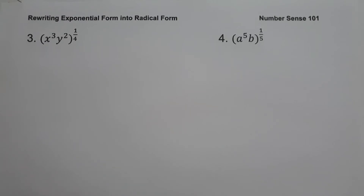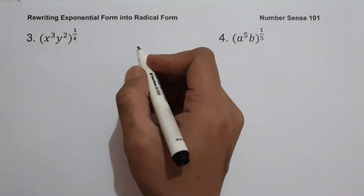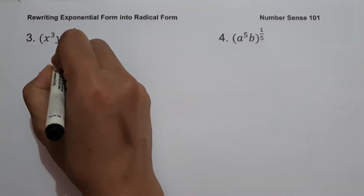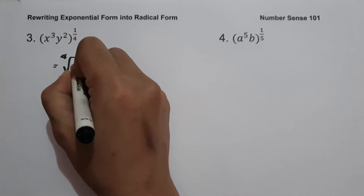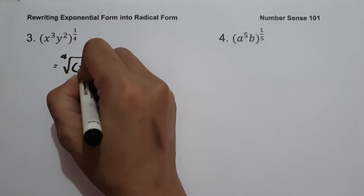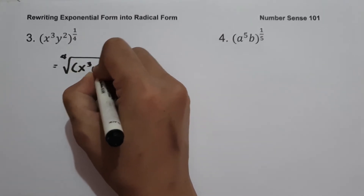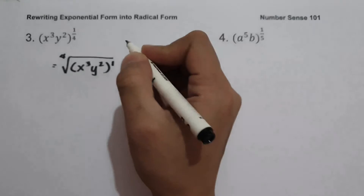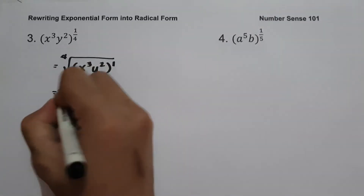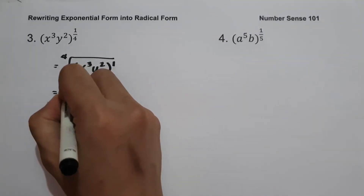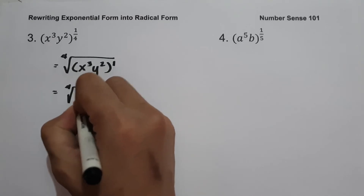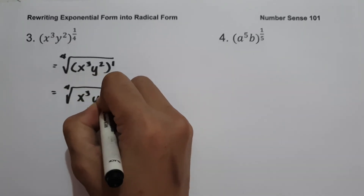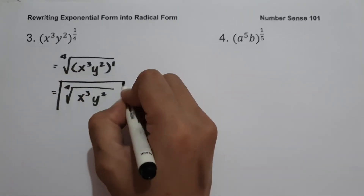For example number three: quantity x cubed y squared raised to 1 fourth. To convert this into radical form, we have the 4th root of quantity x cubed y squared raised to 1. And if we simplify, that is the 4th root of x cubed y squared. And this will be our answer.